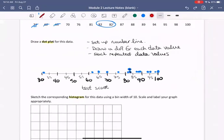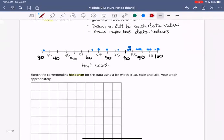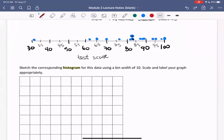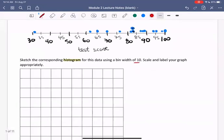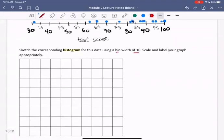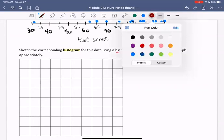Now, another way that we can represent numerical or quantitative data is through a histogram. So in this next section, we're going to sketch the corresponding histogram for this data using a bin width of 10. Scale and label your graph appropriately. So what does this mean, bin width of 10? Well, for a histogram, rather than a dot plot where we represent each data value on our number line with one dot, for a histogram, what we do is collect chunks of data or bins of data and plot the frequency that data values occur within a bin. So we're told that we want a bin width of 10.